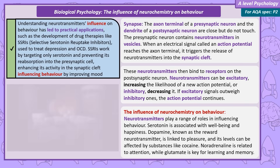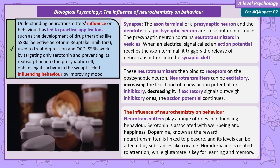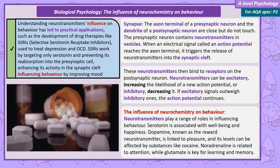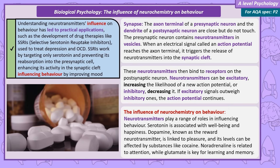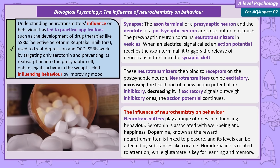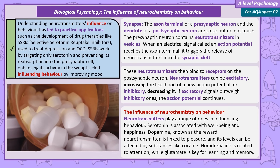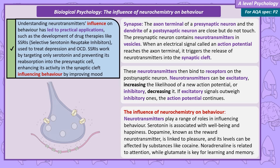Knowing the influence of neurotransmitters on behaviour leads to drug therapies. One class of drugs useful to know are antidepressants called SSRIs. They're used for depression but also OCD. SSRIs are Selective Serotonin Reuptake Inhibitors — a very well named drug, as they only work on serotonin. What they do is stop the reuptake of serotonin, the process of being reabsorbed into the presynaptic cell. This keeps serotonin in the synapse and enhances its activity, increasing feelings of wellbeing and happiness.